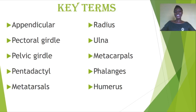Our key terms are: appendicular, pectoral girdle, pelvic girdle, pentadactyl, metatarsus, radius, ulna, metacarpals, phalanges, and humerus. These are the terms we'll come across as we go into this lesson.